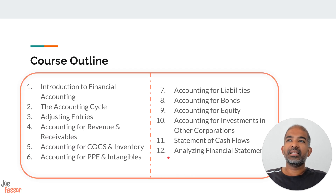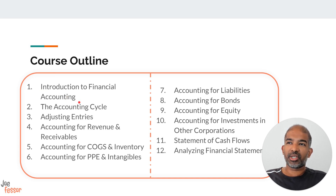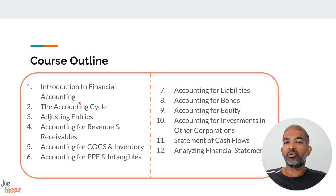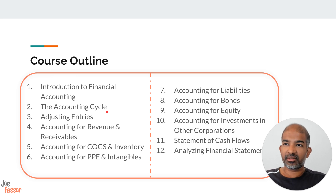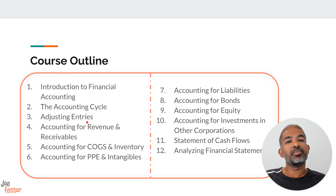Before we get started, let's check out the outline for the whole course and look at what has been planned for the 12 parts or sessions. The first part covers an introduction to financial accounting, where we'll look at what financial accounting is and lay the fundamentals for the four financial statements. In part two, we'll cover the accounting cycle, how to do journal entries and the process leading up to creating the financial statements. Part three covers adjusting entries — the various adjustments that have to be performed before the end of each time period.